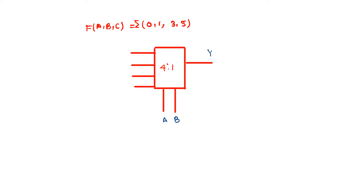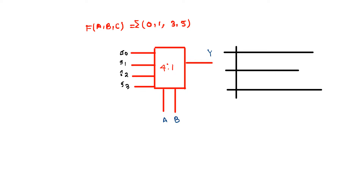As usual, let the inputs be I0, I1, I2, and I3. I'm making a table here — not a truth table, but a specific form of table to help understand the method. AB will be the select lines, and the remaining variable in the given function will be C.